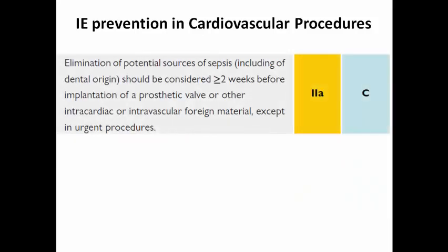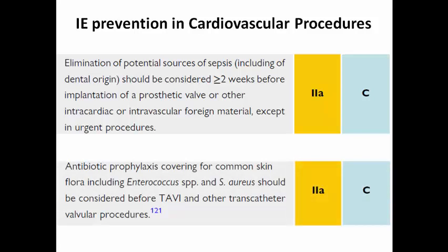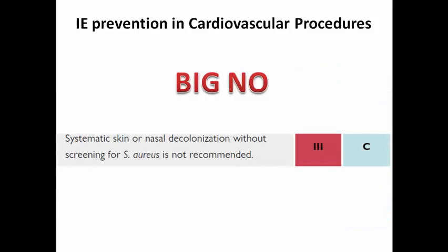If a potential source of sepsis is identified — including dental or oral origin, or nasal swab positive for Staphylococcus aureus — it should be considered to complete at least two weeks of antibiotic therapy before implanting a prosthetic valve or any other intracardiac or intravascular foreign material, including cardiac pacemakers. In urgent procedures, proceed; in elective procedures, wait at least two weeks. Antibiotics should cover common skin flora such as enterococci and Staphylococcus aureus, guided by swab results especially before TAVI and other transcatheter valvular procedures. Systematic skin or nasal decolonization without screening for Staphylococcus aureus is not recommended.